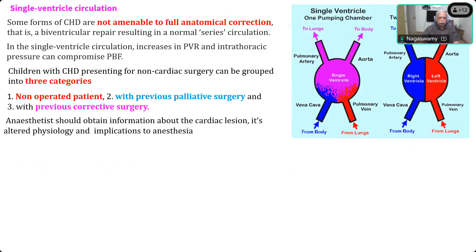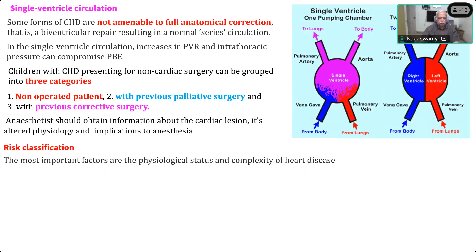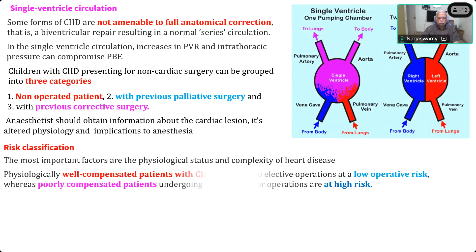The anesthetist should obtain information about the cardiac lesion, its altered physiology, and the implications for anesthesia. We have to classify the risk in these patients. The factors are the complexity of the heart disease — well-compensated patients with congenital heart disease can undergo elective operations as a low-risk procedure, whereas poorly compensated patients are naturally very high-risk.